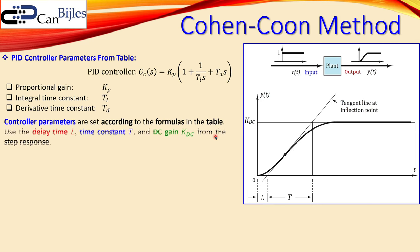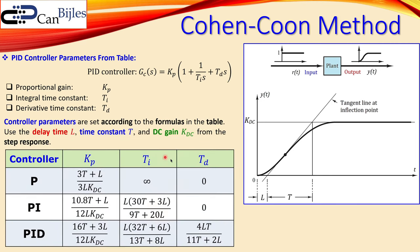The control parameters are set according to formulas in the Cohen-Coon table, using the parameters from the response. For a PID controller, Kp uses the formula involving T, L, and Kdc — all three response parameters. Similarly, Ti and Td each have their own formulas. You can find different expressions for these values in the literature; I have rewritten them in a more readable form to avoid nested fractions, which I think works better and is much easier to follow.